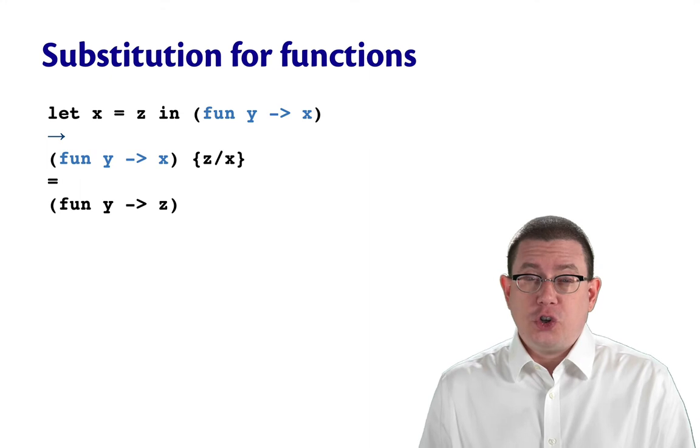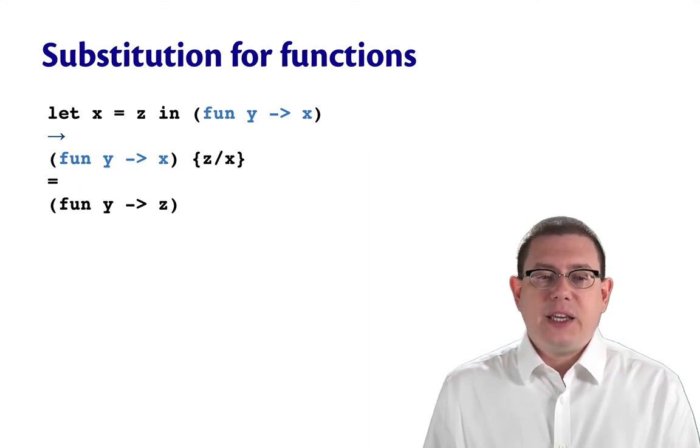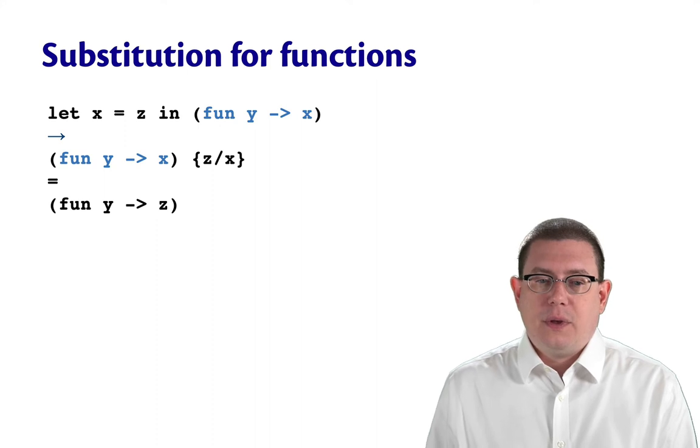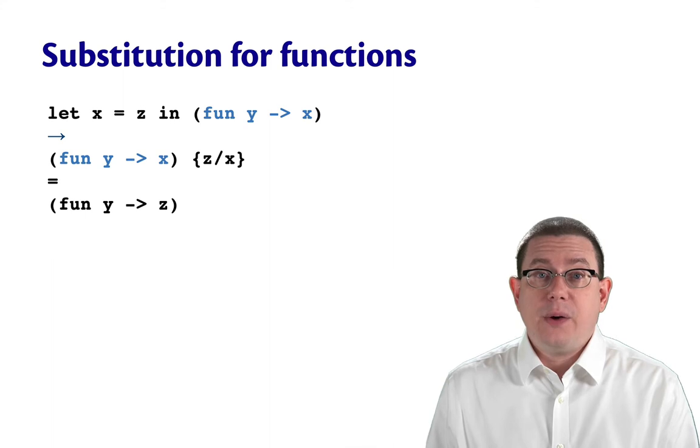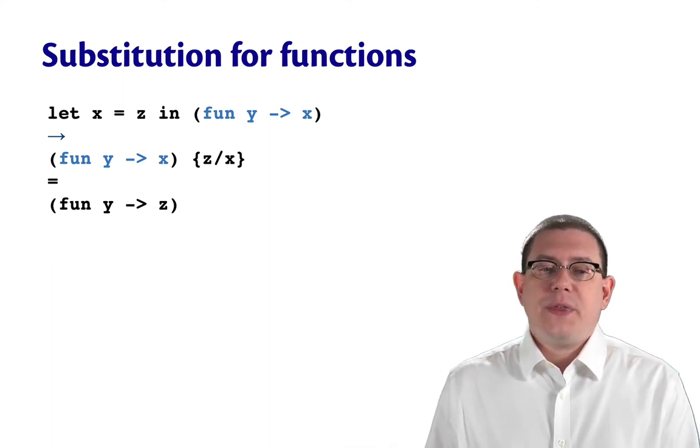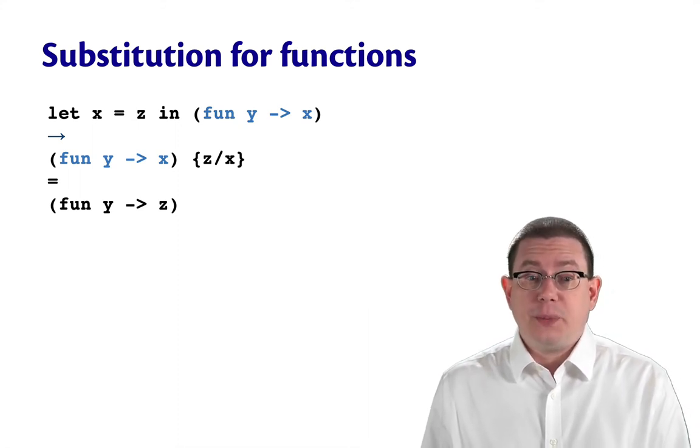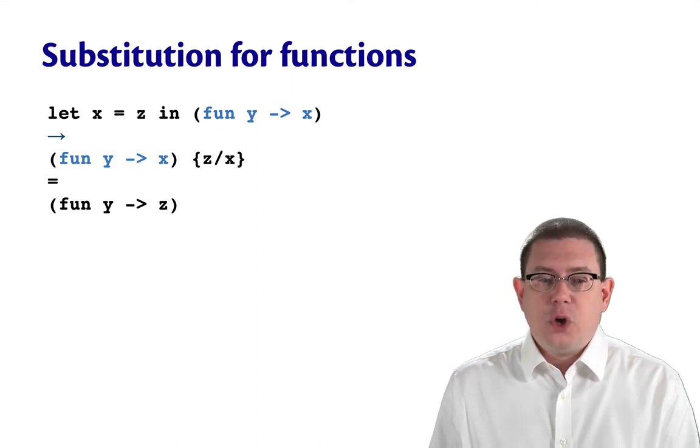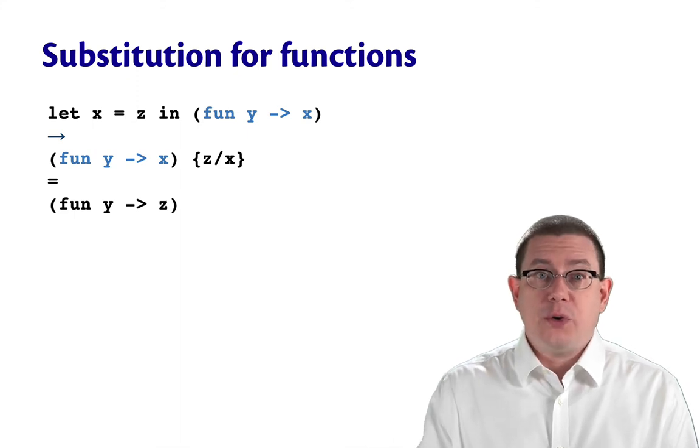Well, let's look at how our definition of substitution works with these functions. Suppose I have a binding let x equals z in the first of those functions, the blue one, fun y arrow x. Well, according to the semantics of let, that's going to step to fun y arrow x, the body expression, with z substituted for x. And according to the definition of substitution for anonymous functions we just gave, since y and x are not the same variable name, we should go ahead and do the substitution of z for x inside of the function body. That would get me the function fun y arrow z.